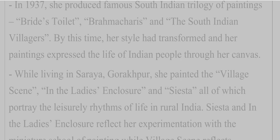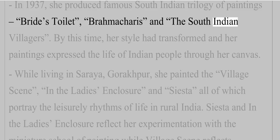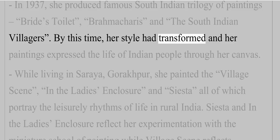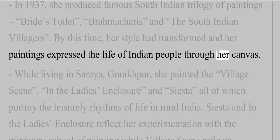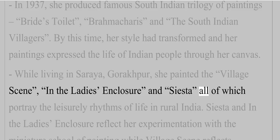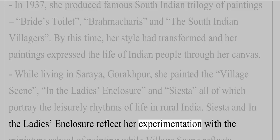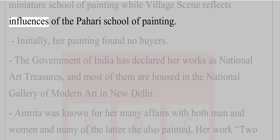In 1937, she produced the famous South Indian trilogy of paintings — 'Bride's Toilet,' 'Brahmacharis,' and 'South Indian Villagers.' By this time, her style had transformed and her paintings expressed the life of Indian people through her canvas. While living in Saraya, Gorakhpur, she painted 'Village Scene,' 'In the Ladies' Enclosure,' and 'Siesta,' all of which portray the leisurely rhythms of life in rural India. 'Siesta' and 'In the Ladies' Enclosure' reflect her experimentation with the miniature school of painting, while 'Village Scene' reflects influences of the Pahari school of painting.